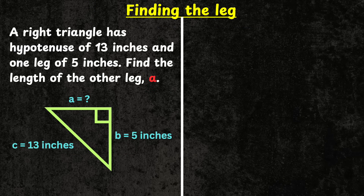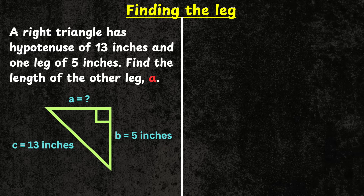Now let's look at the second problem: finding a leg. The orientation of the triangle in this case is different from the first one, but it doesn't change anything. You need to identify the two legs, which are always perpendicular to each other, and then the hypotenuse, which is opposite to the right angle and is the longest side. The problem says: a right triangle has a hypotenuse of 13 inches and one leg of 5 inches. Find the length of the other leg A.